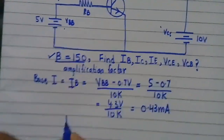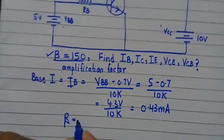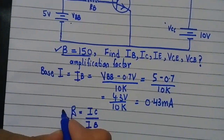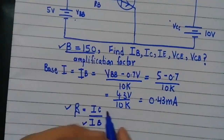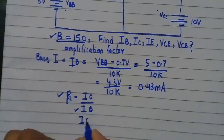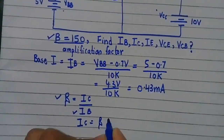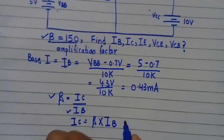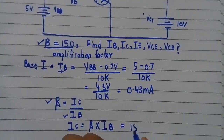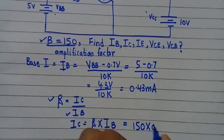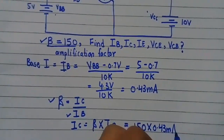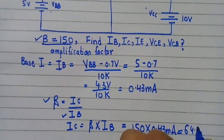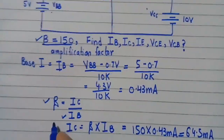As we already know, beta equals Ic / Ib. Since we know beta and we know Ib, we can find Ic. So Ic = beta × Ib. Beta equals 150, so Ic = 150 × 0.43 mA.